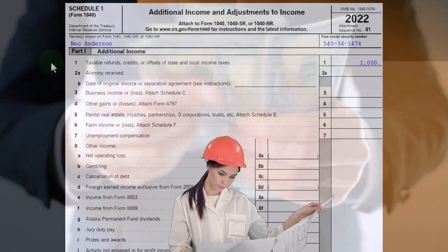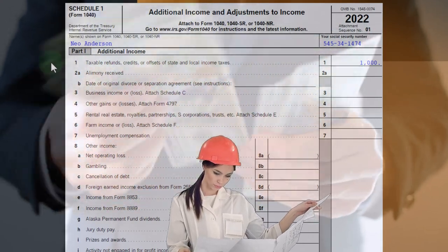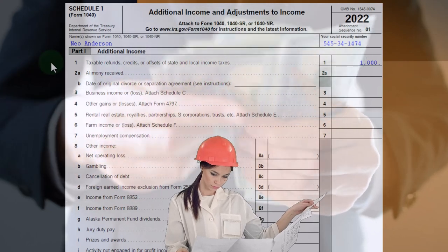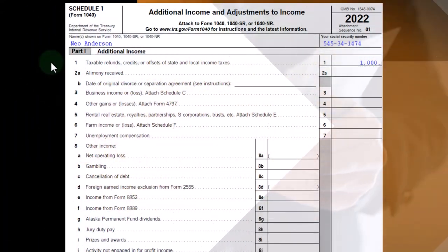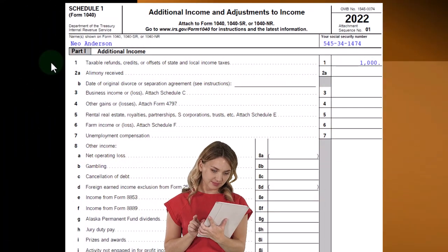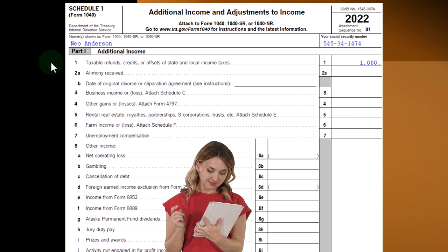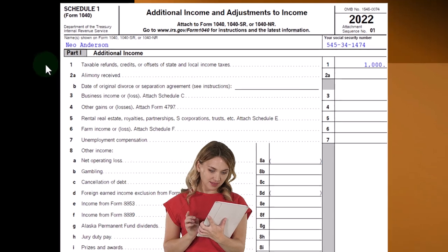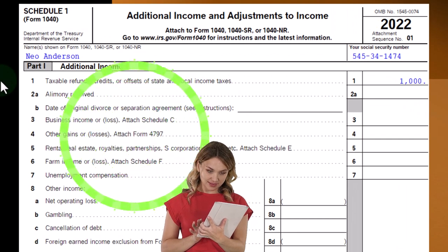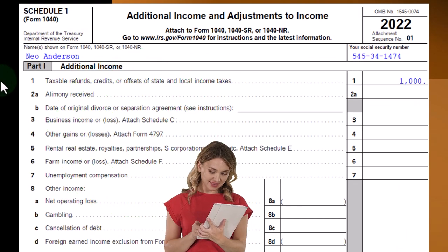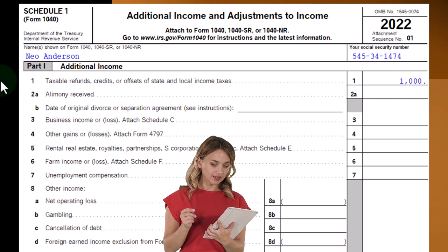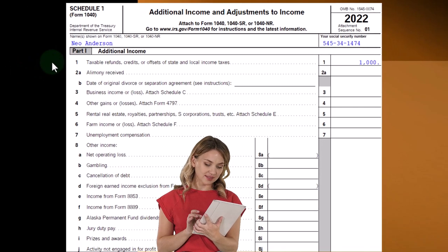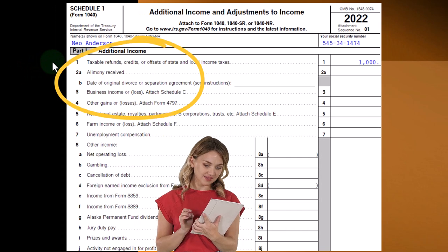You deducted more in 2021 than you otherwise would have been able to, because they gave you money back. To deal with that, you could amend the federal income tax return to correct the itemized deductions — or you could simply say: if you get a refund and you got a benefit from it, you have to include it in income in 2022. That's the general scenario.